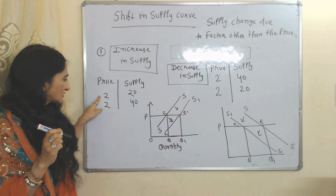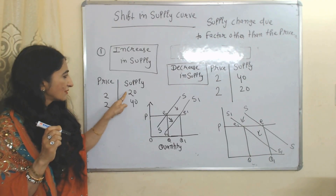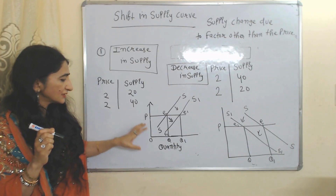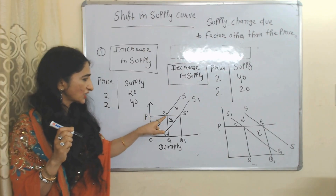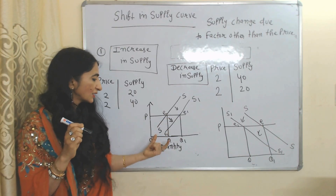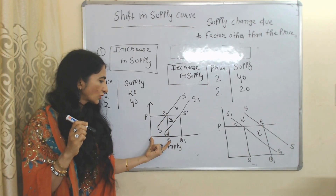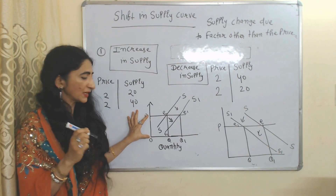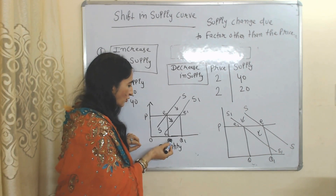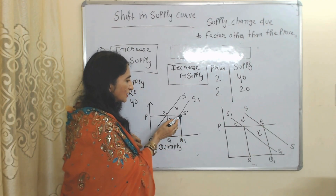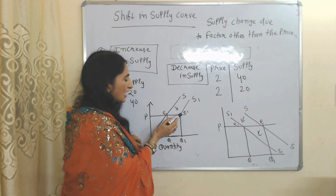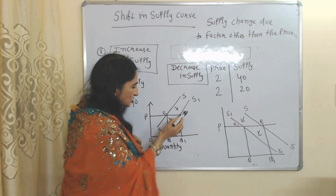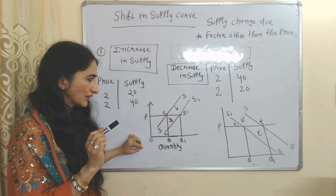Increase in supply means price is constant but still supply is increasing, because supply is not influenced by price in this case. As you can see in the table, price is constant but supply increases from 20 to 40. In the diagram, the initial equilibrium point is E, quantity is OQ, and price is OP. Price remains constant at OP, but supply increases from Q to Q1, and our new equilibrium point is E1. As supply increases, the supply curve shifts forward to S1, our new supply curve.